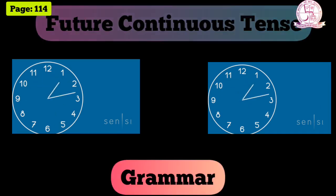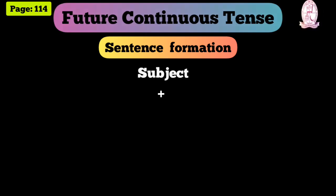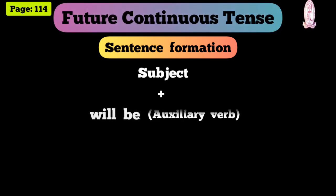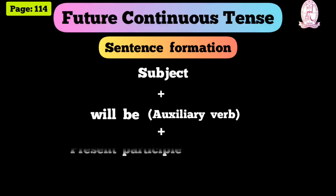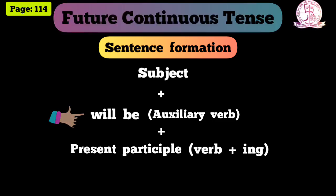Now we will see future continuous tense sentence formation — how it is structured. First, subject. Next, auxiliary verb 'will be'. After that, what comes? Present participle. What is present participle? Verb plus '-ing' added is present participle. So, future continuous tense sentence formation: subject + will be + present participle. That is future continuous tense.